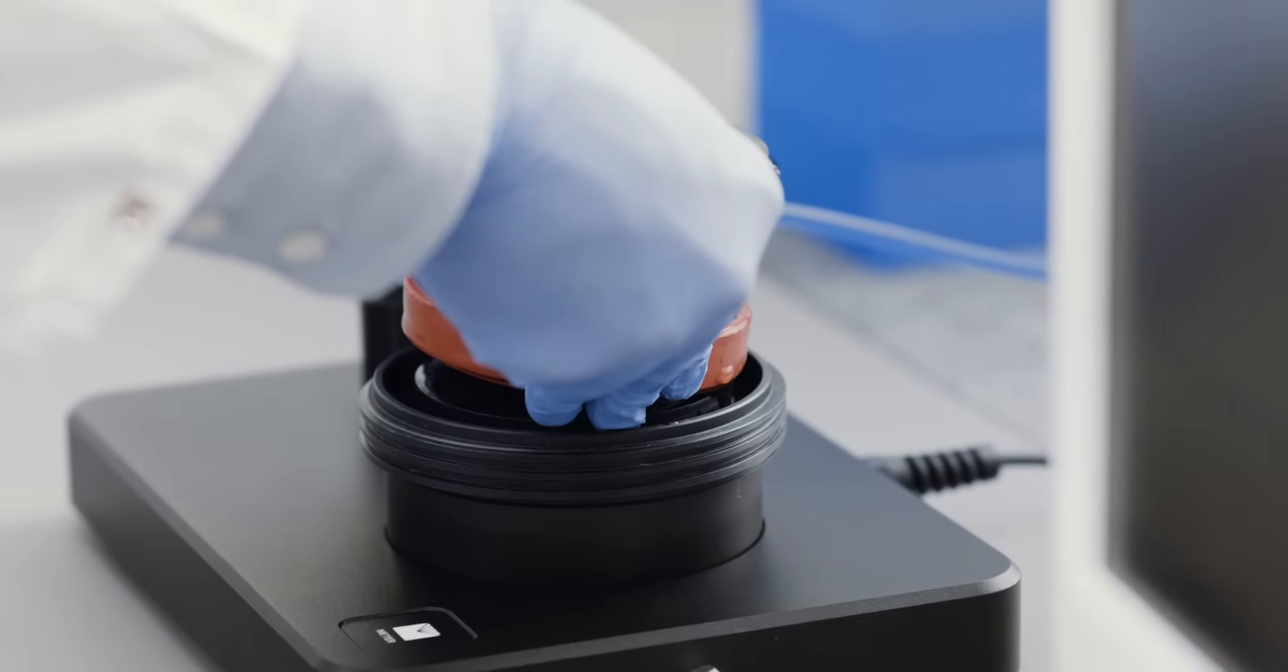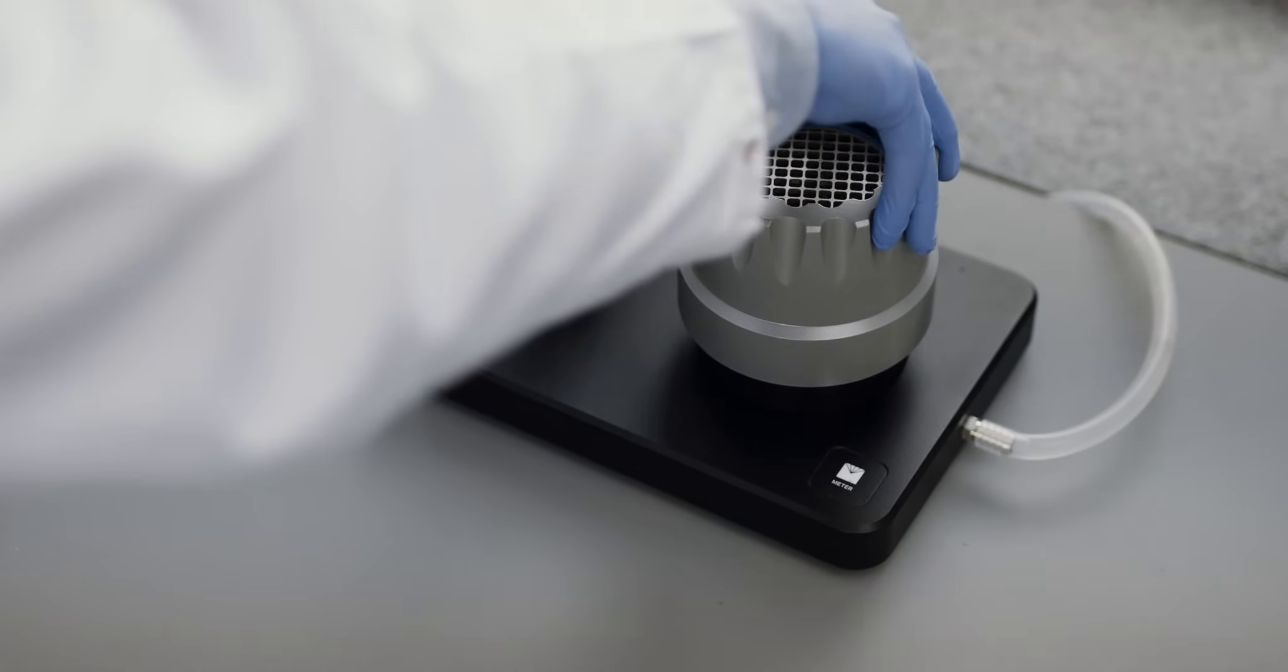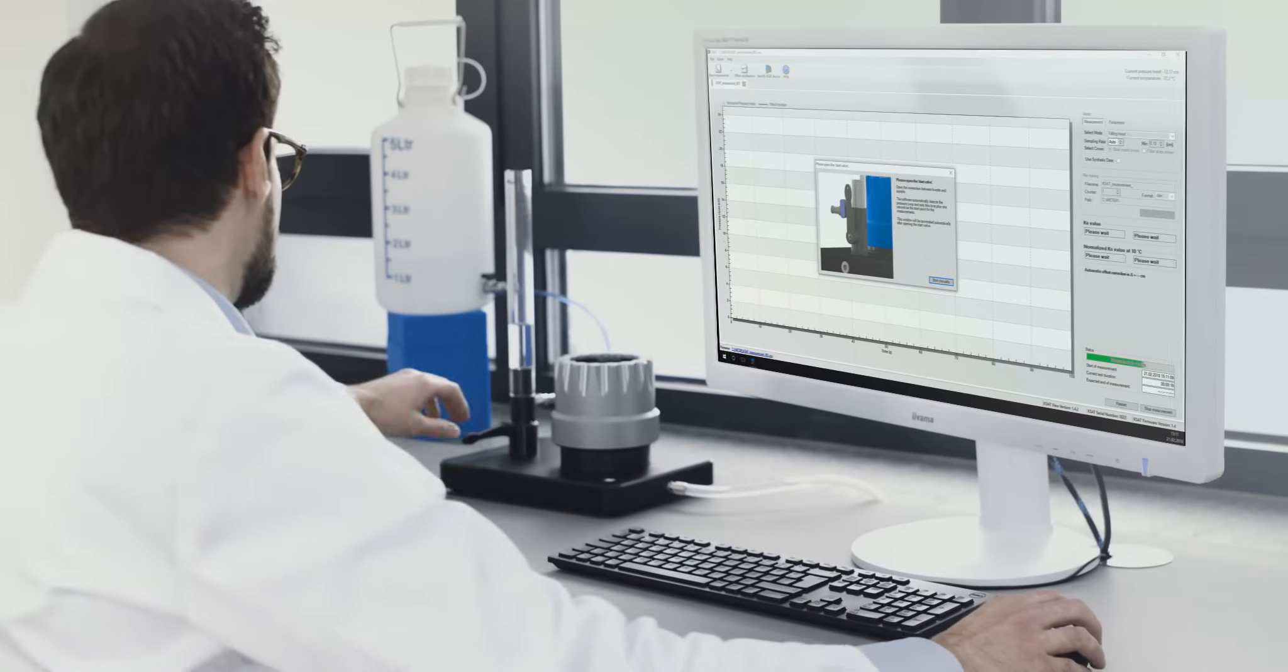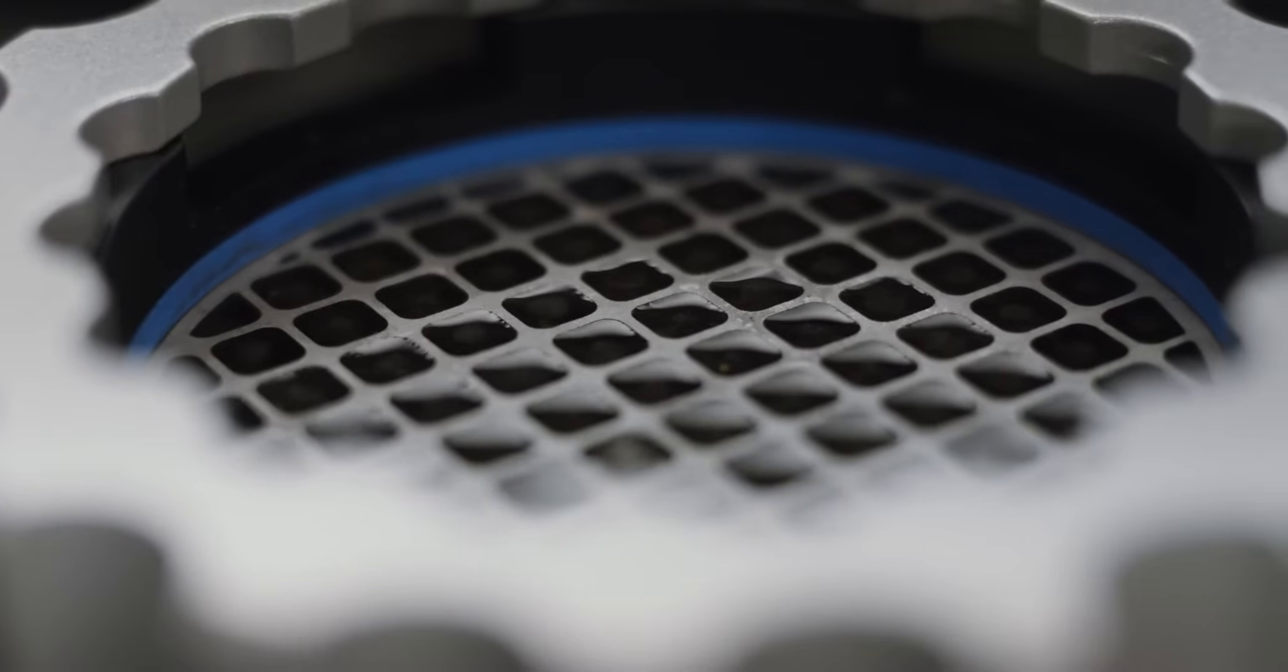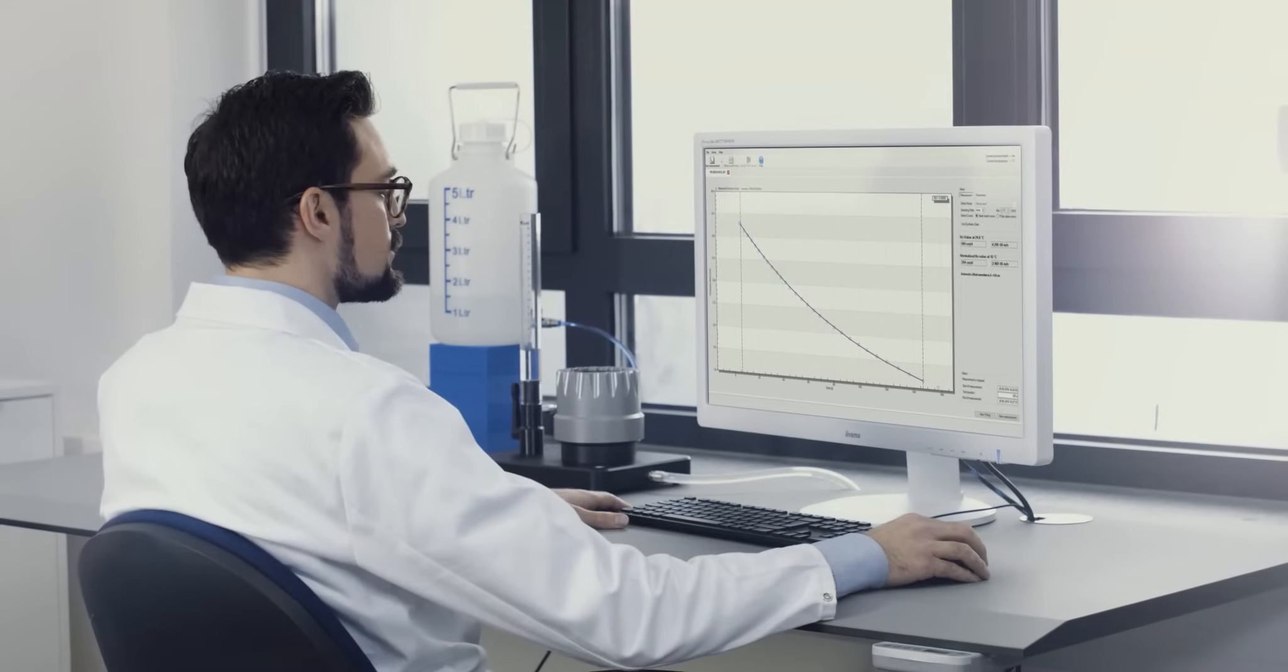Prepare the sample, put it into the calibrated KSAT, and tighten the cap. Turn the valve, let the water run through the sample, and get the saturated hydraulic conductivity.